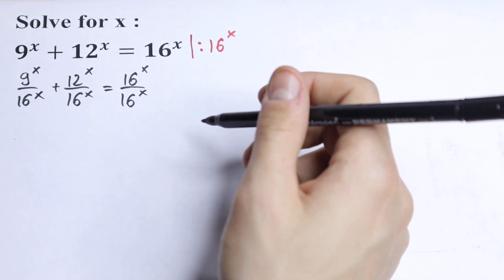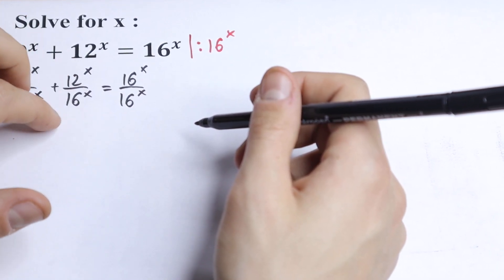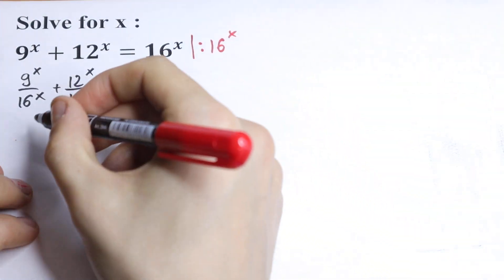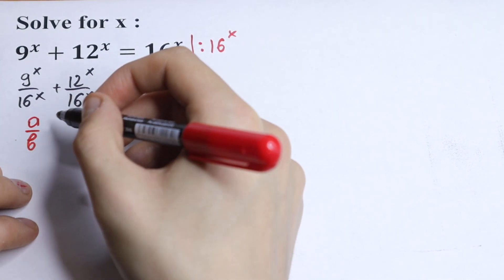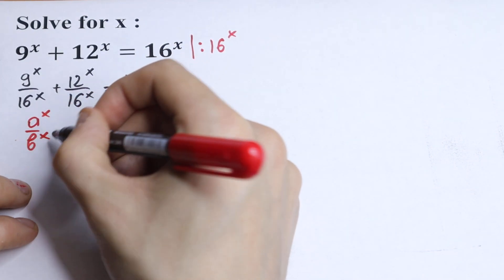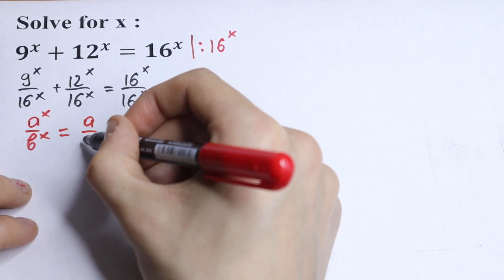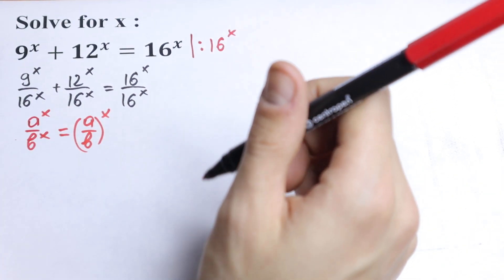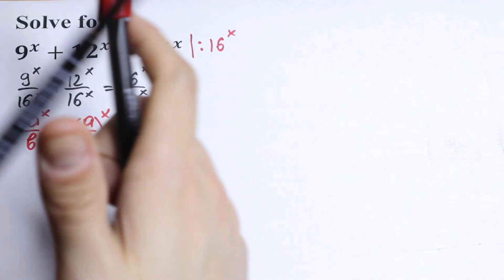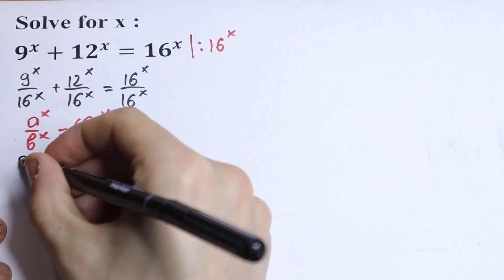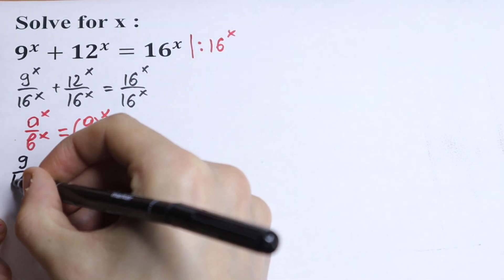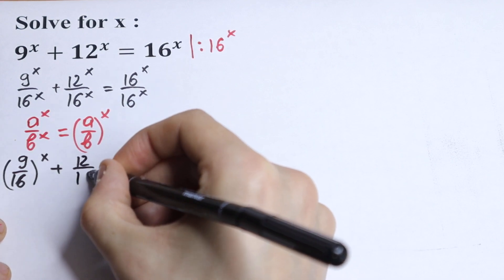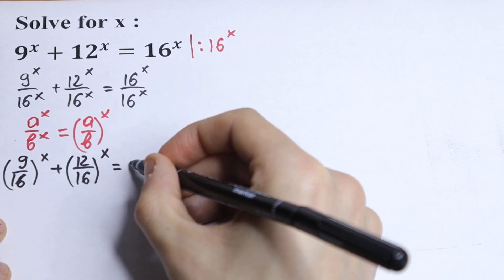We have a situation where we have different bases but the same exponent on each term, and the right-hand side equals 1. The rule we need here: if we have a to the power x and b to the power x, we can write it as a over b to the power x. Using this rule, we get 9 over 16 to the power x plus 12 over 16 to the power x equal to 1.